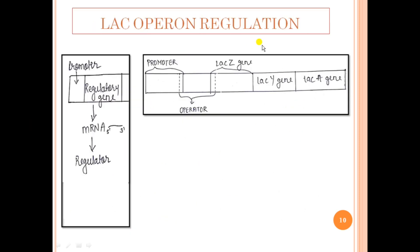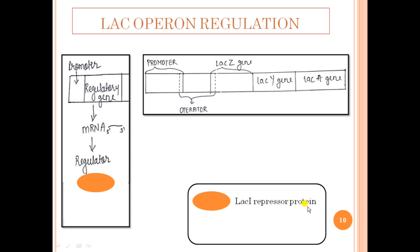Now let us see how the lac operon brings about regulation of the expression of the structural genes. It does so with the help of the regulatory gene present adjacent to the lac operon, under the control of a constitutive promoter — meaning this promoter is always on and will always transcribe the regulatory gene into mRNA. On translation, this gives the regulator called the lacI repressor protein. This lacI repressor protein goes and binds to the operator region of the lac operon, so RNA polymerase cannot bind to the promoter and there will be no transcription of the lacZYA genes.